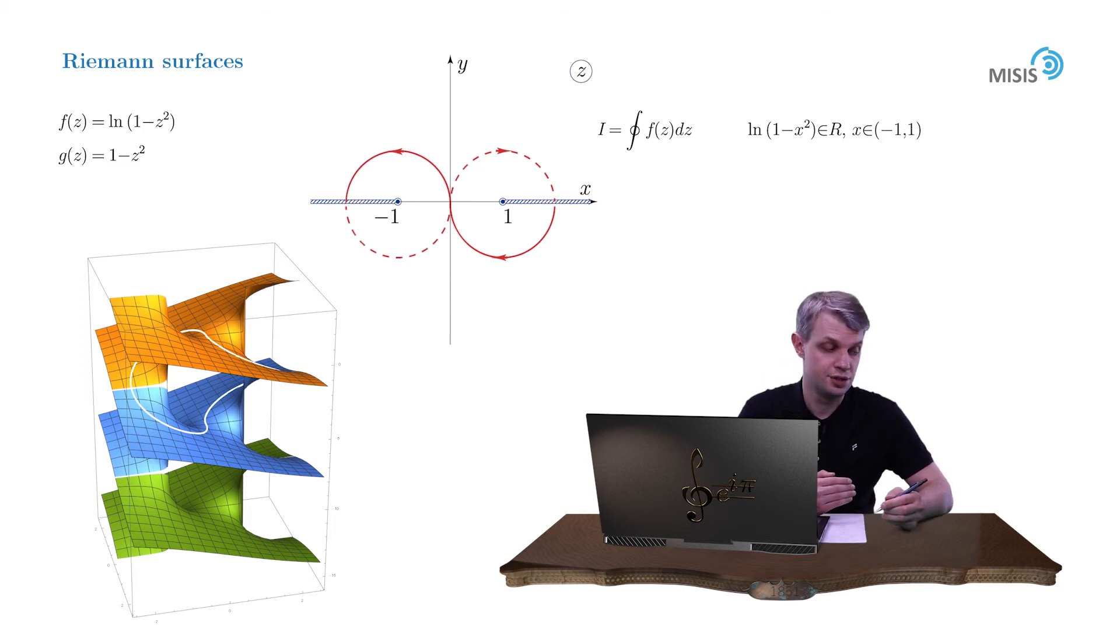The key idea to compute such integrals is of course a suitable contour deformation. For example here, the arc of the contour positioned on the first Riemann sheet can be shrunk into a linear segment connecting branch points negative 1 and 1. So let us do this.